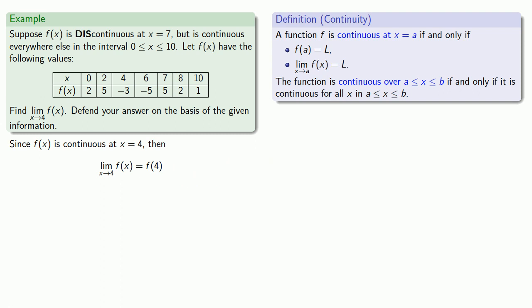And we know f of 4 is negative 3. And so that tells us the limit as x approaches 4 of f of x will be negative 3.